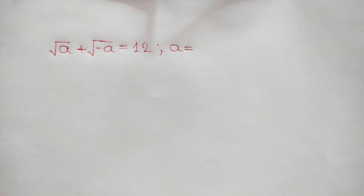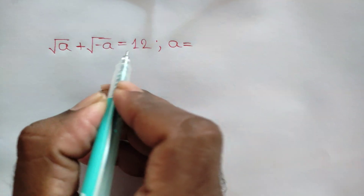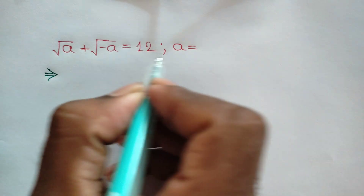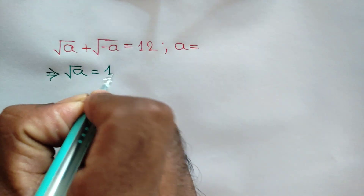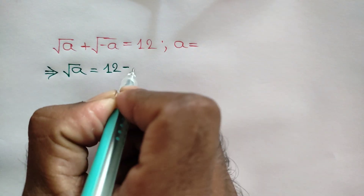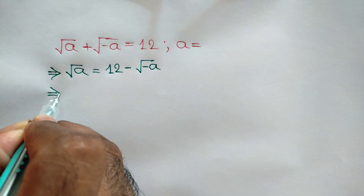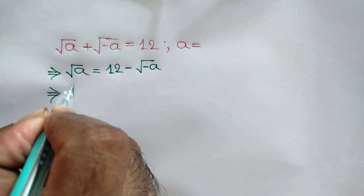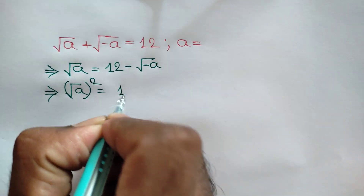Hi everyone. In this video I am going to show how to find the value of a, where square root of a plus square root of negative a is equal to 12. Taking the square root of negative a to the right side, we get square root of a is equal to 12 minus square root of negative a. Now squaring both sides, we can write square root of a whole square is equal to 12 minus square root of negative a whole square.